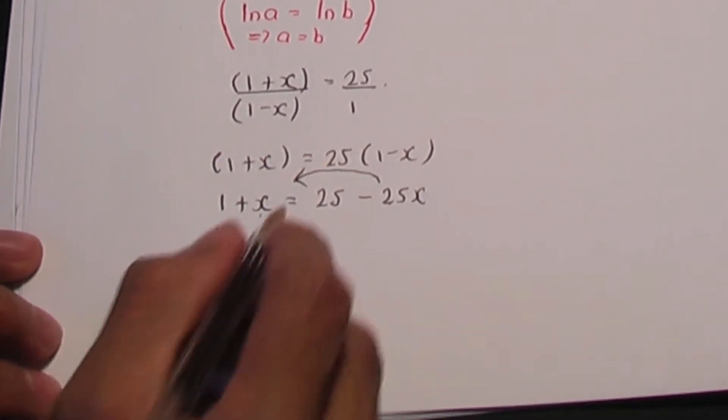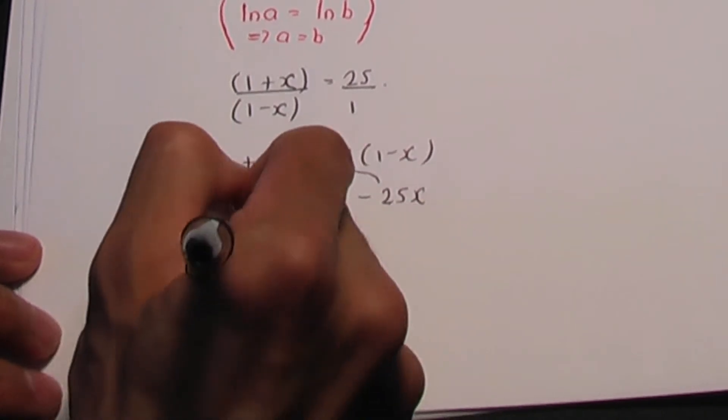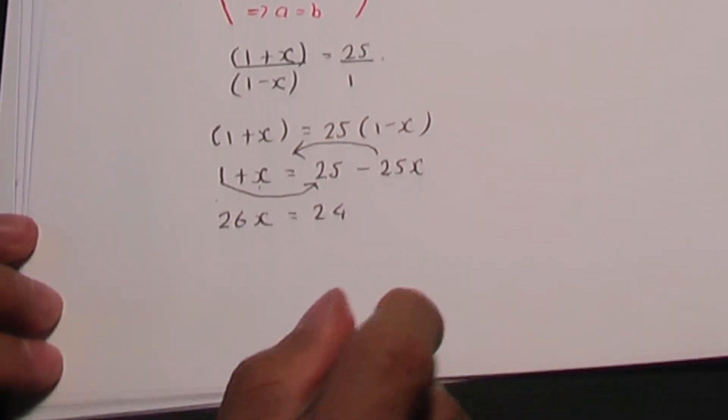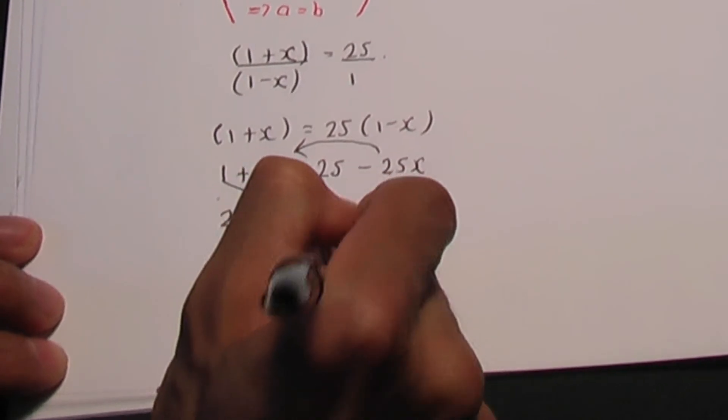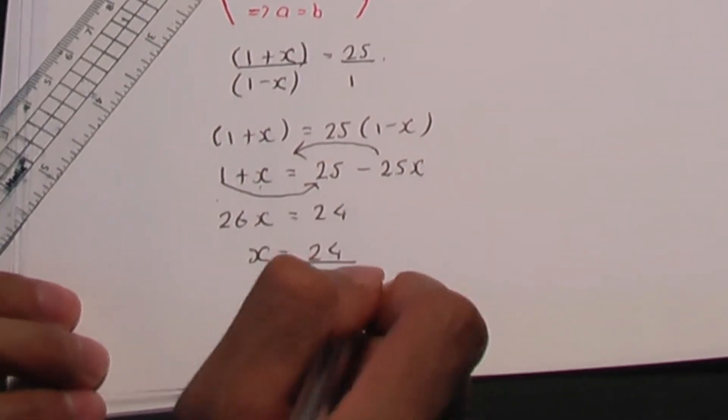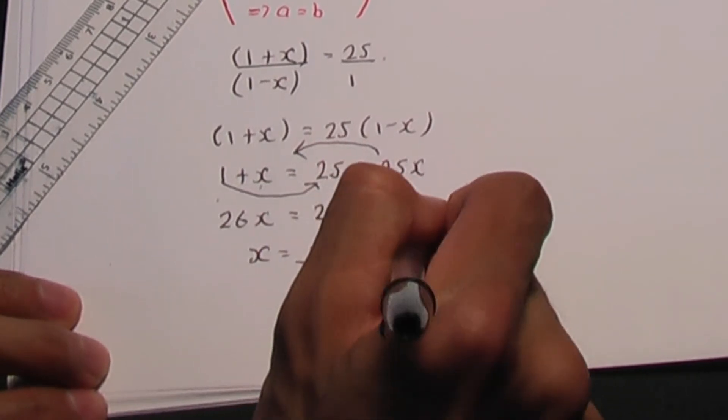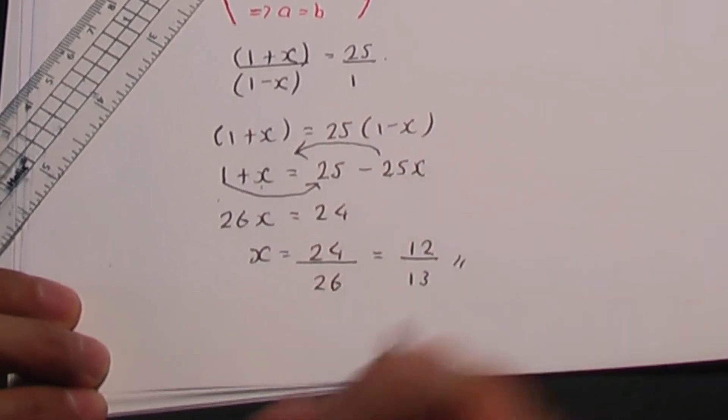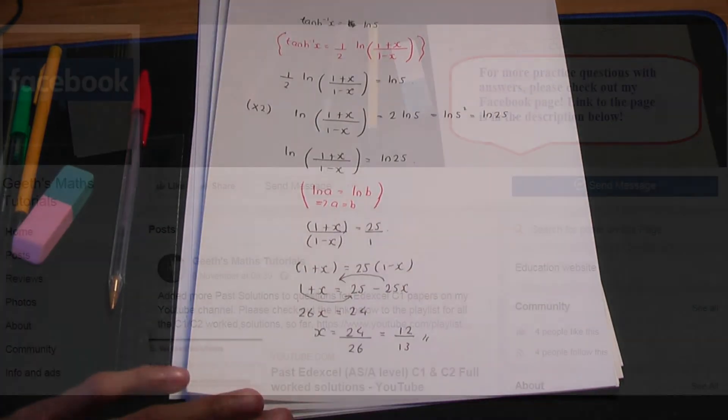That's equal to 25 minus 1 is 24. So x is 24 over 26, and that cancels down to 12 over 13. So that is the solution for x.